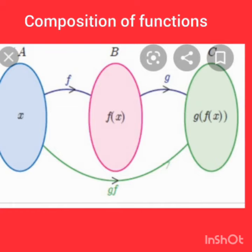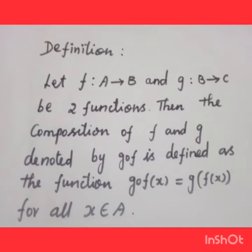Composition of functions. We consider two functions f from A to B and g from B to C. Then the composition of two functions, g circle f, is defined as g circle f of x equals g of f of x, for all x belongs to A.